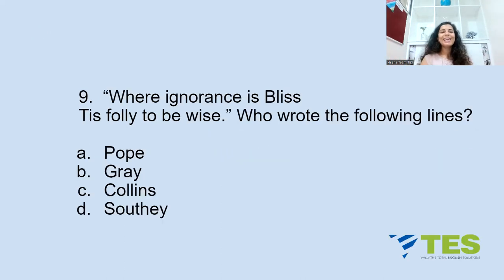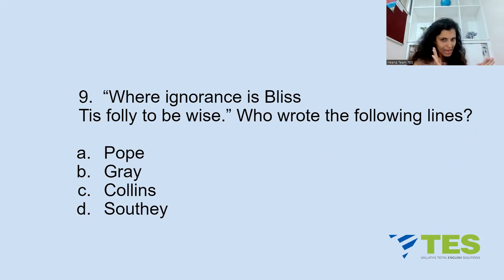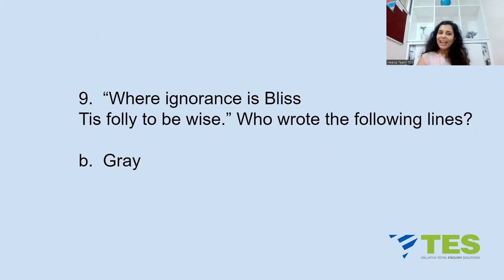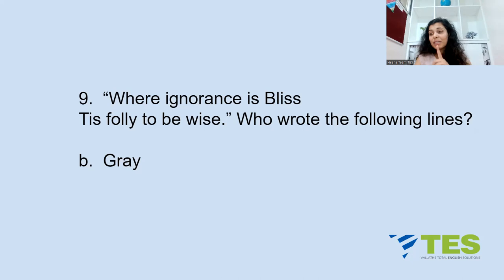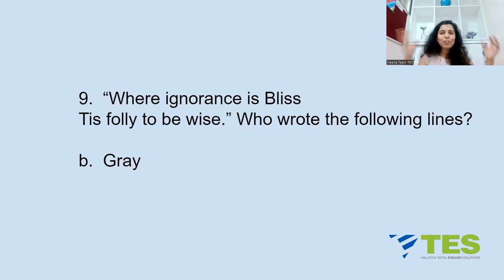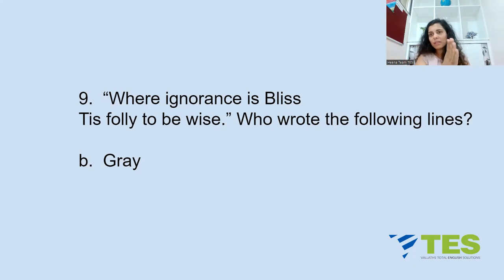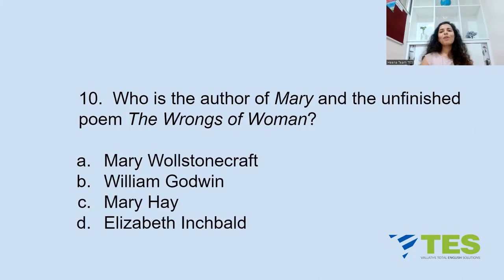Question 9: 'Where ignorance is bliss, it is folly to be wise' — who wrote these lines? A: Pope, B: Gray, C: Collins, or D: Sodeh. The answer is Option B — Thomas Gray, the 18th-century poet. He wrote these lines in his poem 'Ode on a Distant Prospect of Eton College' of 1742. What Thomas Gray actually meant is that we should not trouble our minds unnecessarily about what lies ahead — though today we simply say 'ignorance is bliss.'